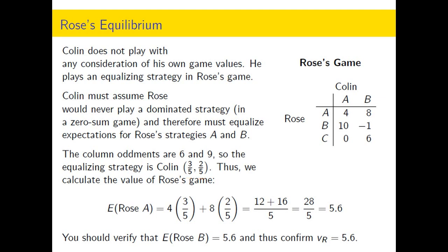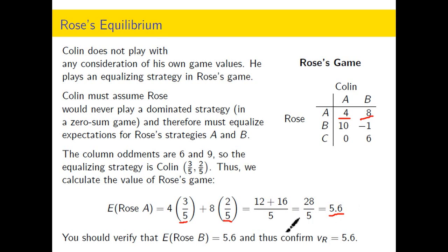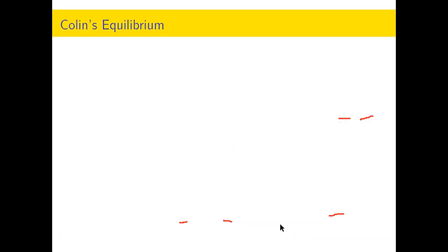Now we calculate Rose's expected value. We take 4 times the proportion of time Colin plays A, plus 8 times the proportion of time Colin plays B. Rose's value against Colin's equalizing strategy is 5.6. We now have the x-coordinate of the Nash equilibrium, and we'll solve Colin's game to find the y-coordinate.